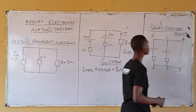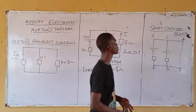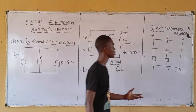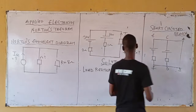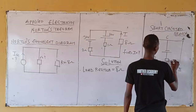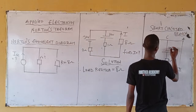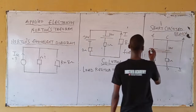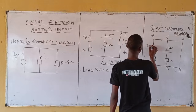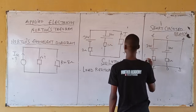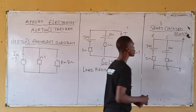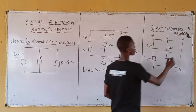You need to short-circuit this branch. You should short-circuit this branch. Then the next thing is: calculate I short-circuit. Now from here, your I short-circuit —